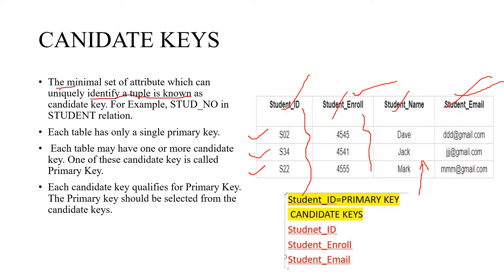The minimal set of attributes means that it has a unique property to identify the tuples in a relation — that can be a single attribute or a set of attributes. In some cases, a single attribute has a unique property to identify individual tuples. In other cases, there is a set of attributes needed to identify each record. So a candidate key can be a single attribute or multiple combination of attributes which can uniquely identify a tuple.